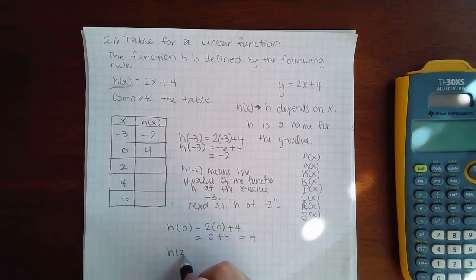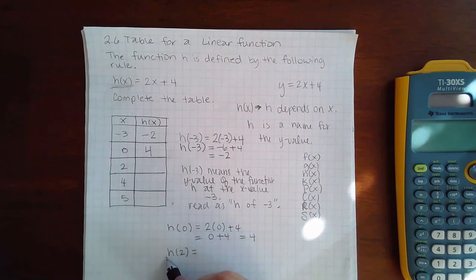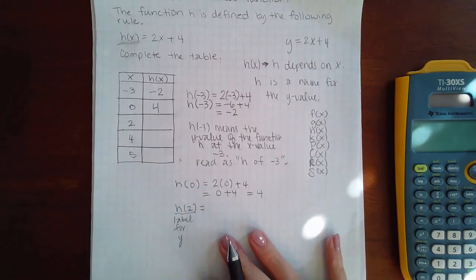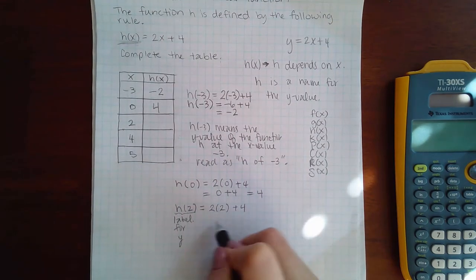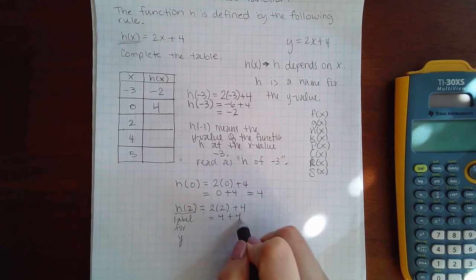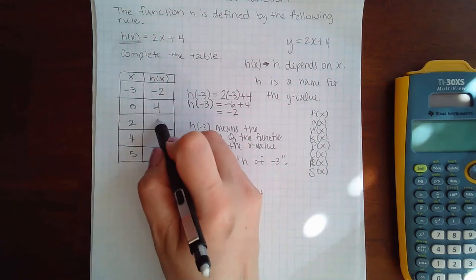Then I'm going to find h of 2. So really, this is nothing more than just a label for the y value. That's all it is. So let's plug in 2 now. 2 times 2 plus 4 is going to be 4 plus 4, which is equal to 8. So I could fill in this box.